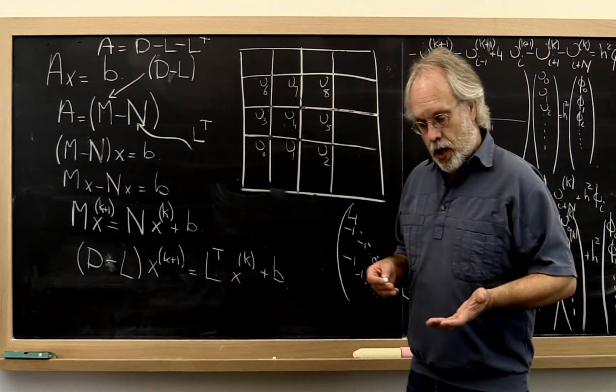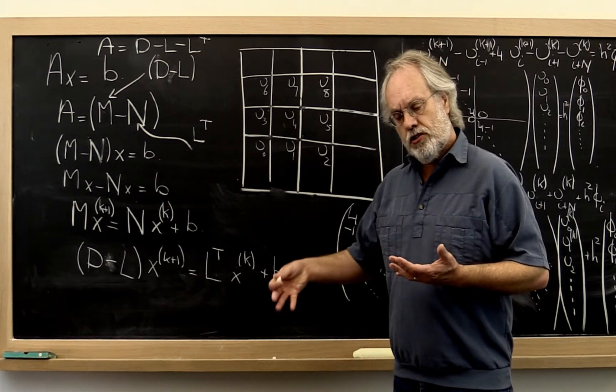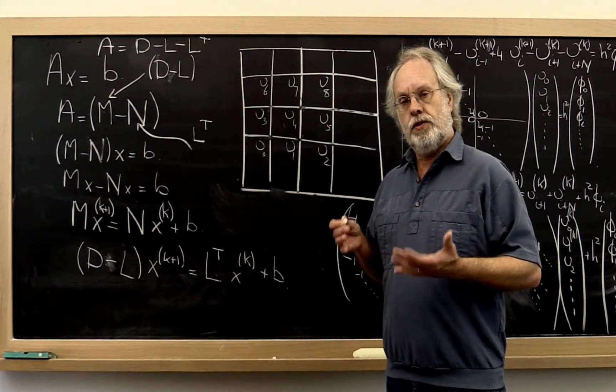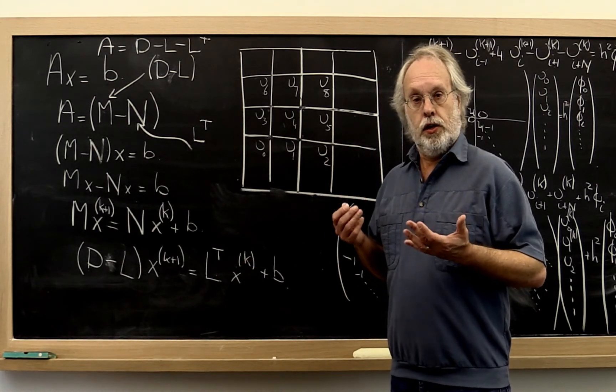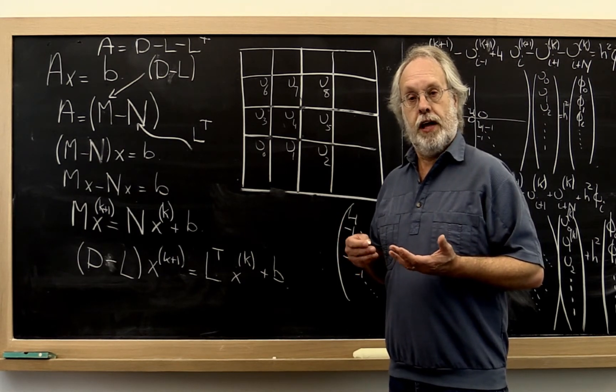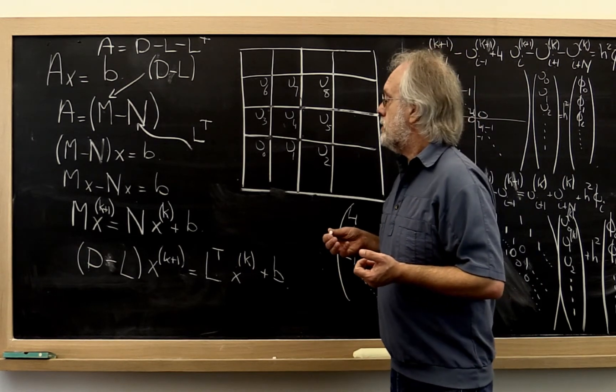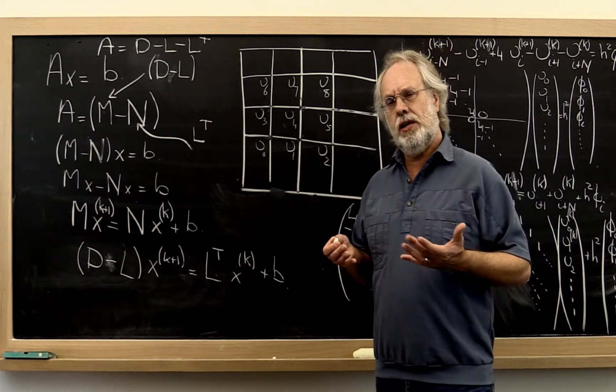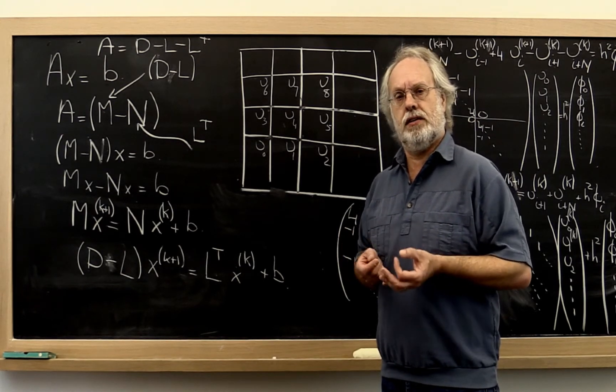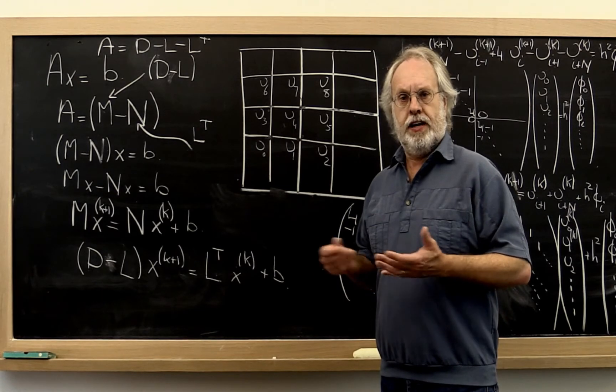What we saw was that the convergence constant was dependent on the largest eigenvalue of M inverse N. It would be nice to parameterize these splitting methods in a way that improves how fast they converge.